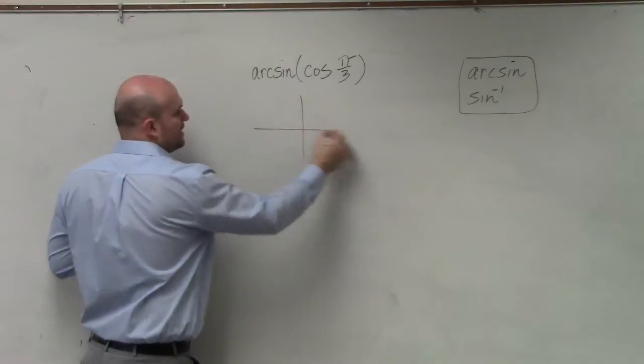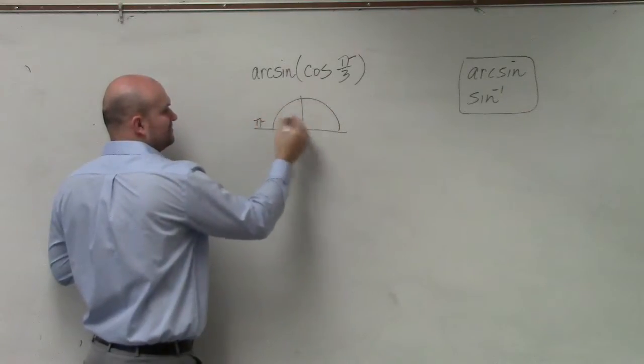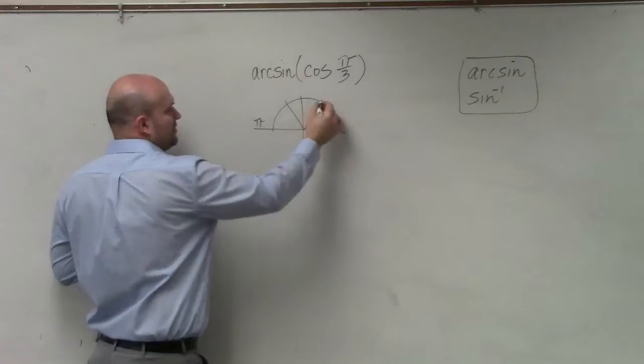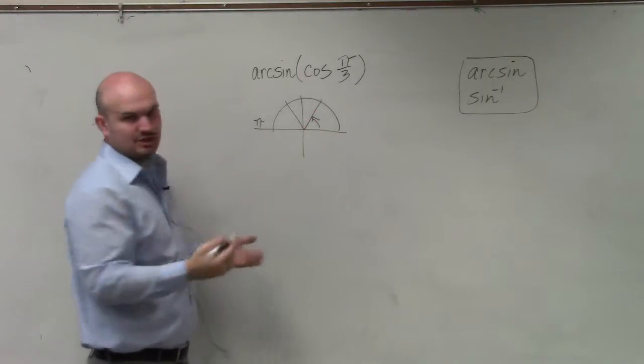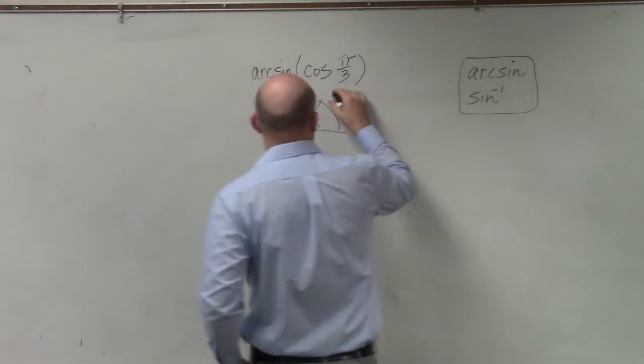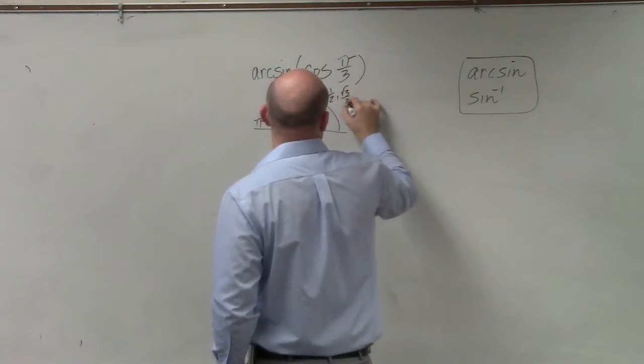We need to figure out where is pi over 3. Well, if here's pi, then pi over 3 is 1 third, which is right there. What is the coordinate point for pi over 3? That is going to be 1 half comma square root of 3 over 2.